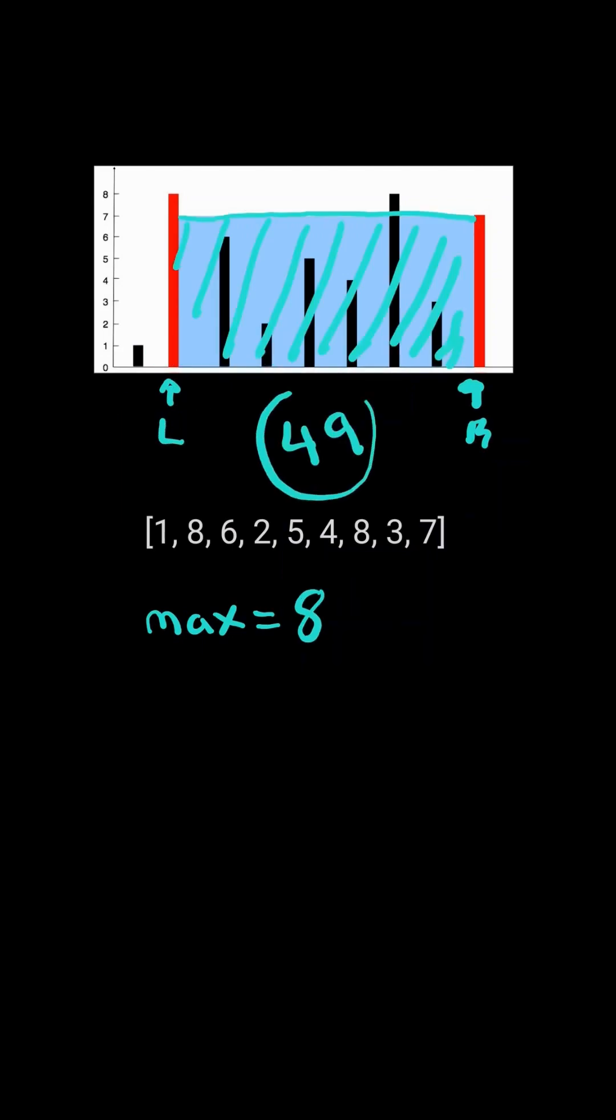We calculate the area between L and R. It's greater than our max, so we update the max. R has the smallest height, so we advance R and continue.